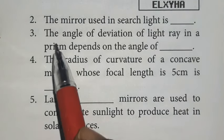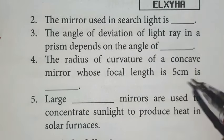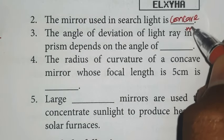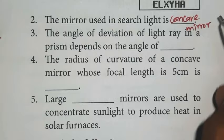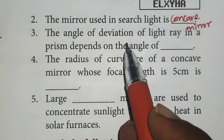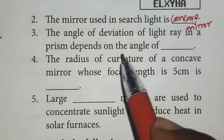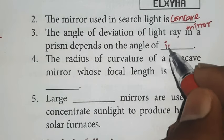Second one, the mirror used in searchlight is concave mirror. Third one, the angle of deviation of light ray in a prism depends on the angle of incidence.